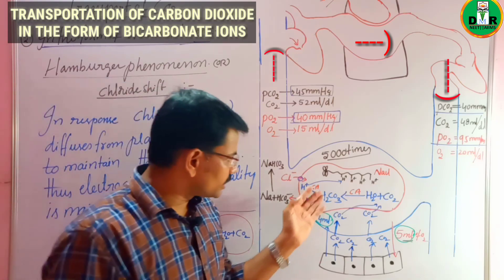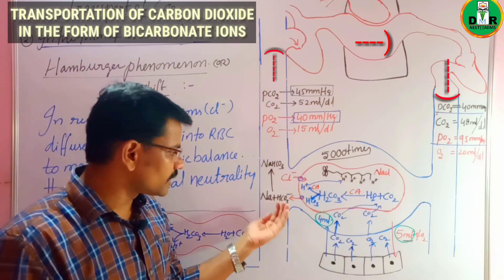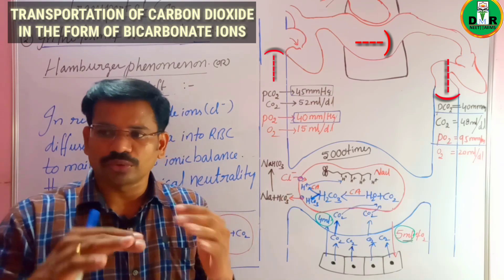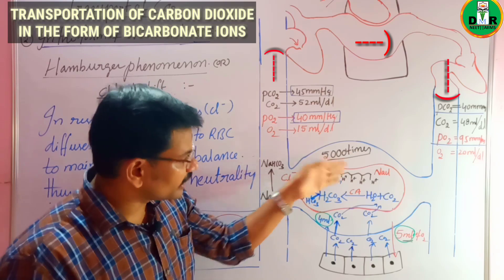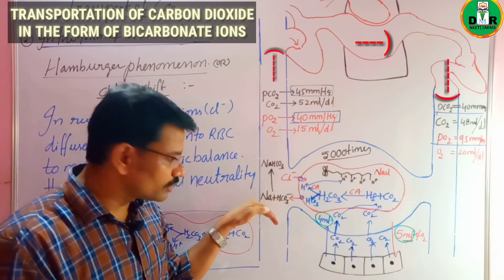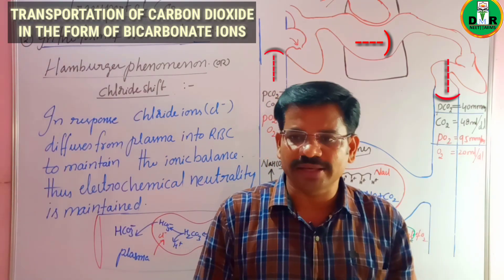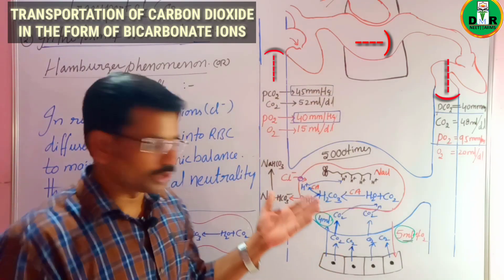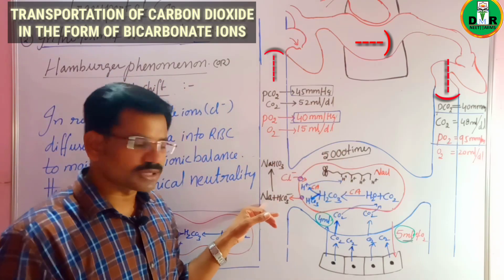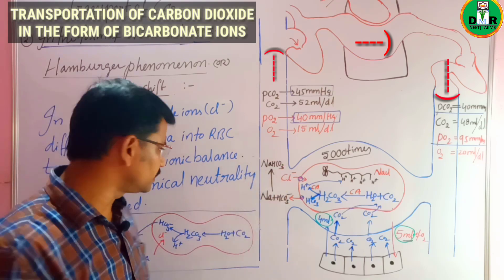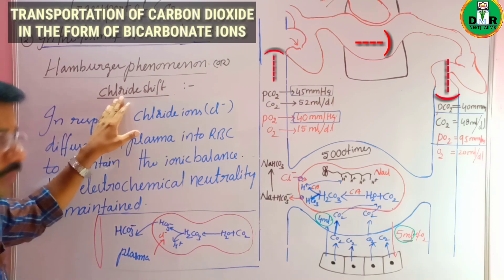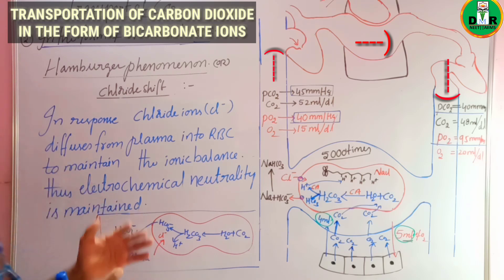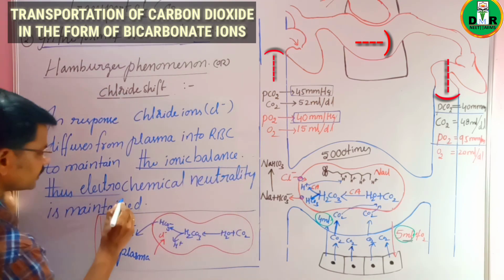This creates a problem: H⁺ ions are retained inside the RBC while HCO₃⁻ (negatively charged) ions are leaving. This disturbs electrochemical neutrality — positive charges accumulate inside the RBC and negative charges increase in the plasma. To compensate for this, another process takes place during CO₂ transportation, called the chloride shift, or Hamburger phenomenon.